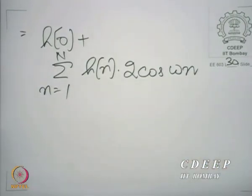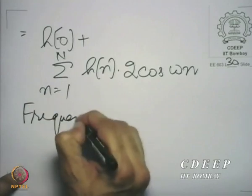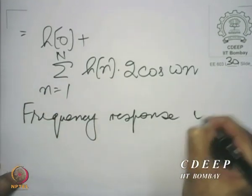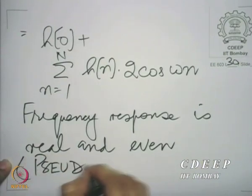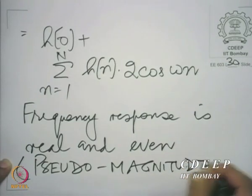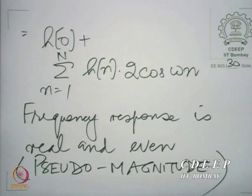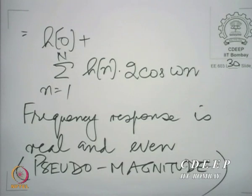So, when you have a real and even impulse response, as we expect, the frequency response is also real and even. This is called the pseudo magnitude. It is called the pseudo magnitude because if you now delay this impulse response by N samples to make the FIR filter causal, the only change that takes place in the frequency response is a factor of e raised to the power minus j omega times the delay, and that only contributes a linear phase.